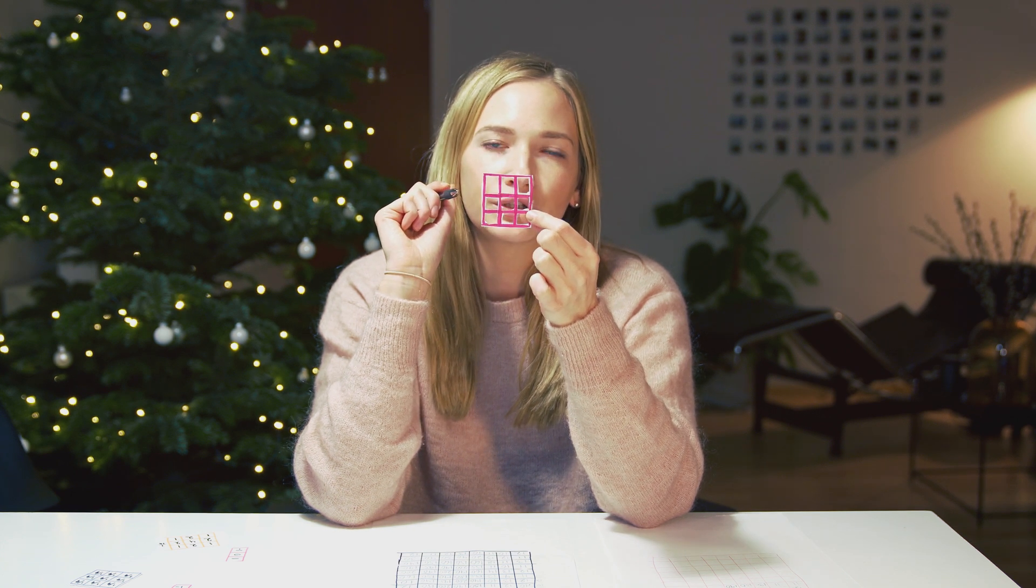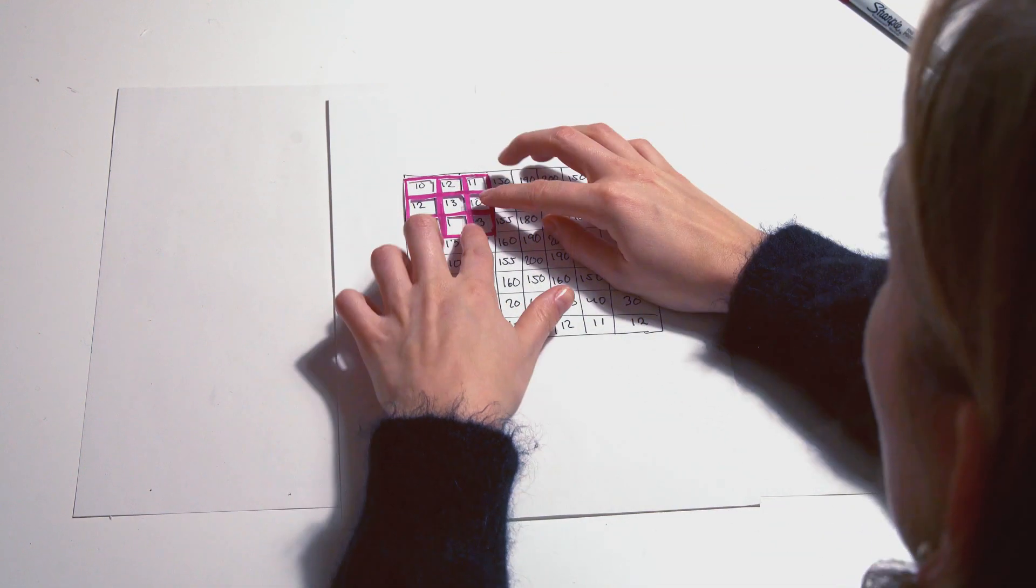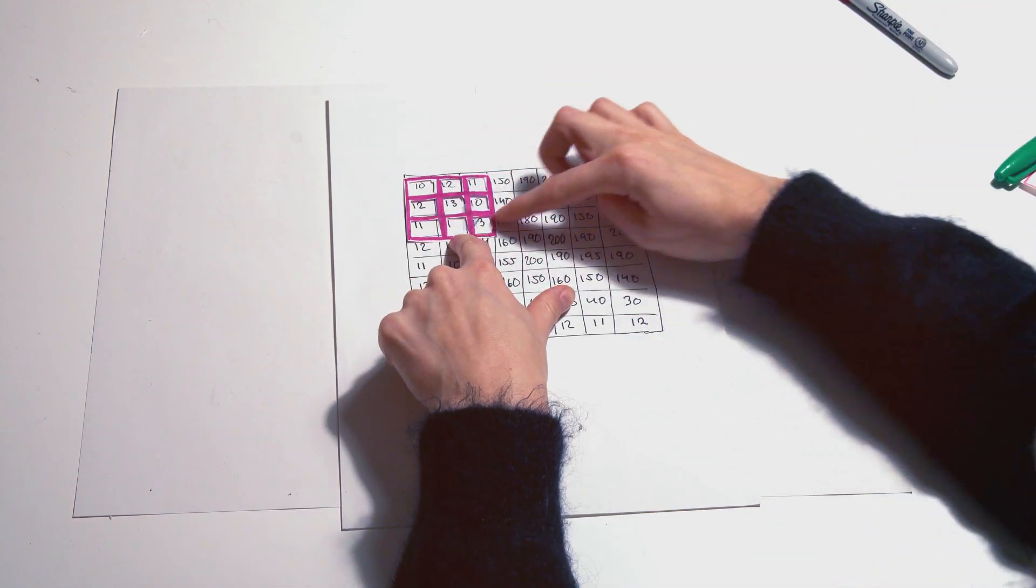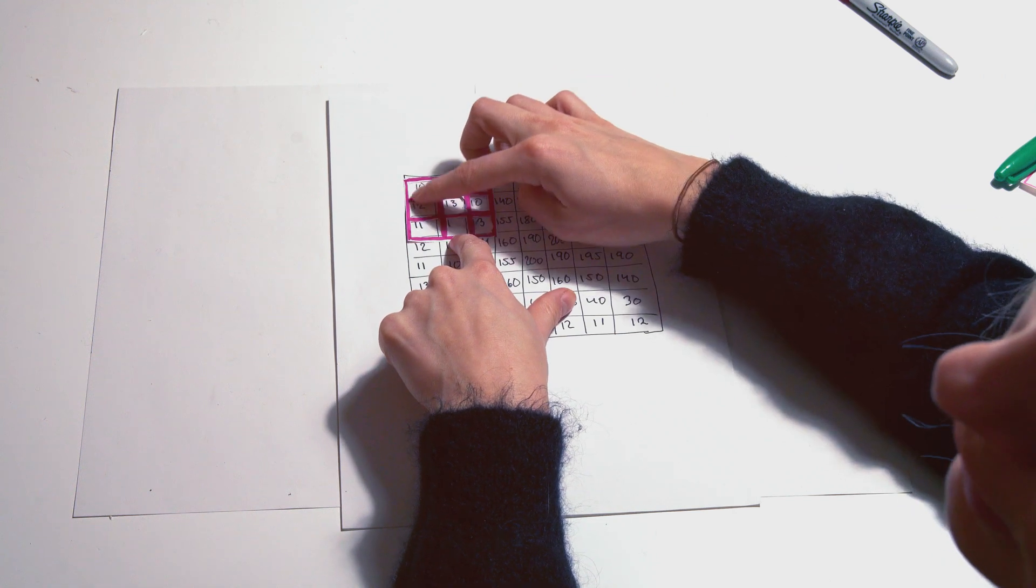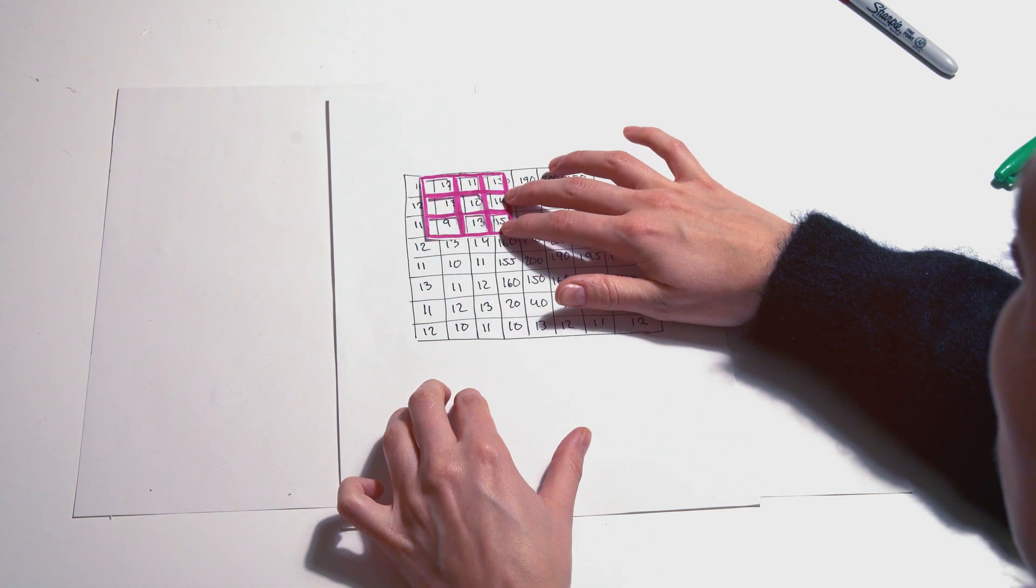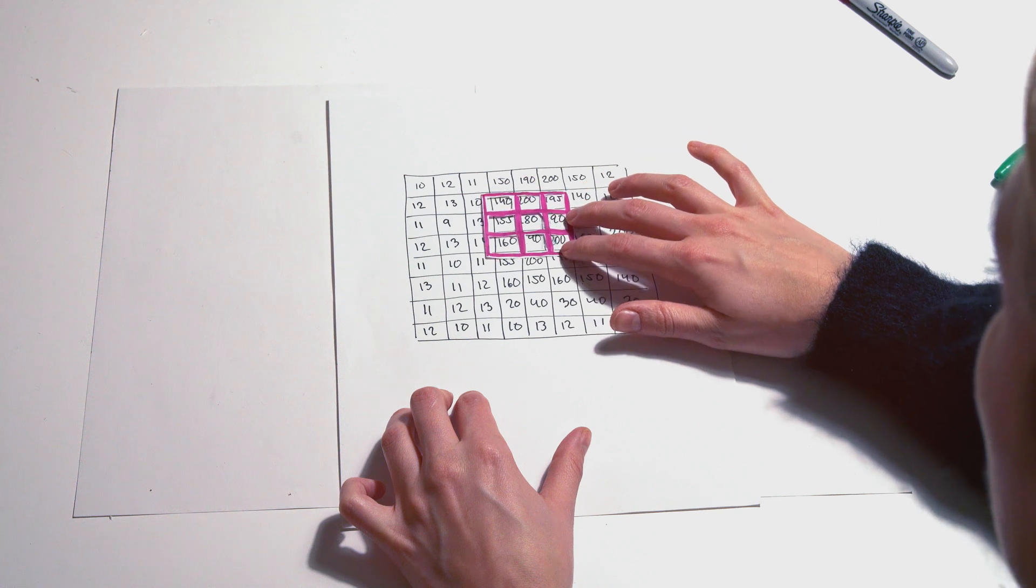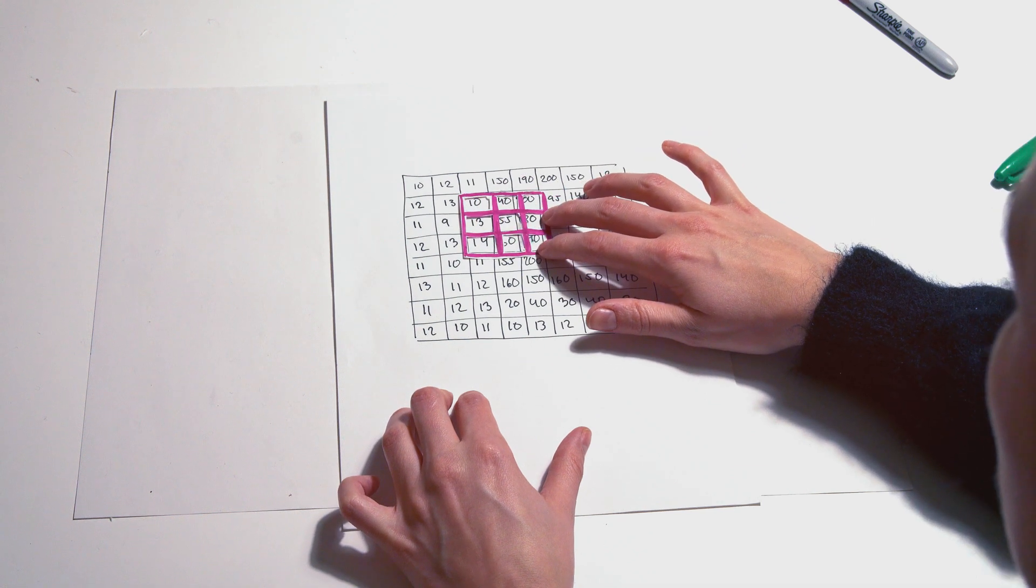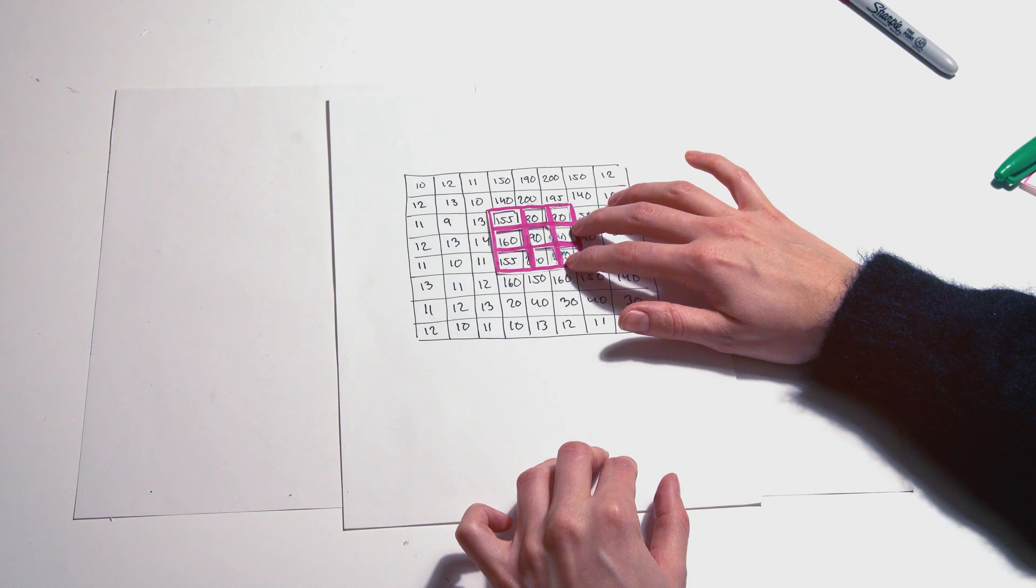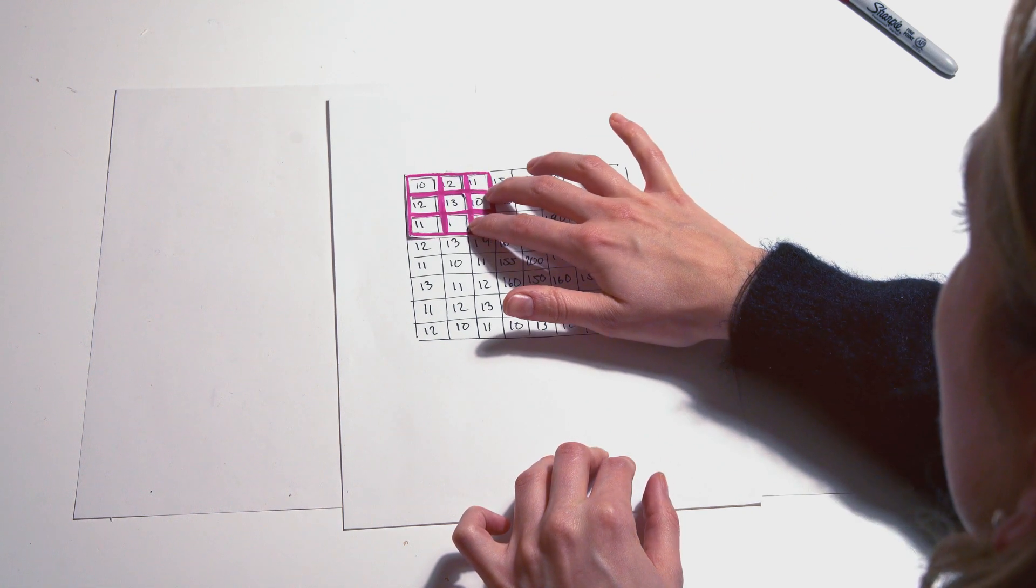What you do is put the kernel over the pixel you want to calculate, and then you look at the neighboring pixels around it. No pixel is a lonely island. Everything in the picture is correlating a little bit with the pixel around it, and that is what we want to catch.